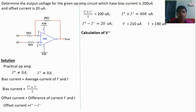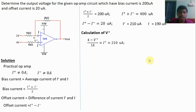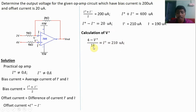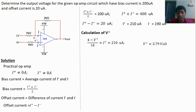By Ohm's law — I = (V1 − V2) / R — where I plus = 210 micro ampere, V1 = 4 volts, V2 = V plus, and R = 1 kΩ. Simplifying the equation, we can calculate V plus. V plus equals 3.79 volts.